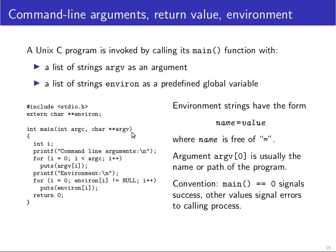If a process is a C program, it is invoked by calling its main function. The main function receives as an argument a list of strings — there's an integer variable indicating how many arguments there are, and an array of pointers pointing to the start of those strings. Using a for loop and outputting the strings the argv array points to gives you the command line arguments passed to the program.